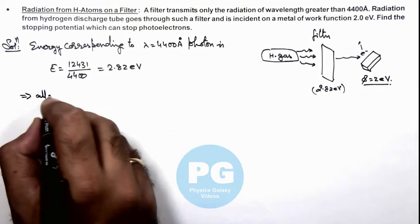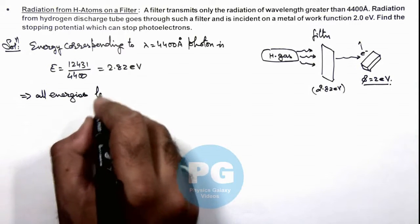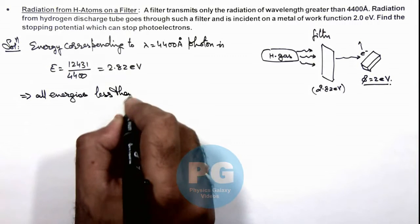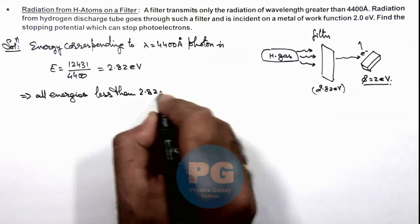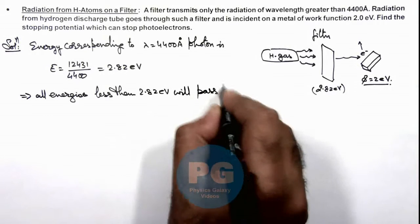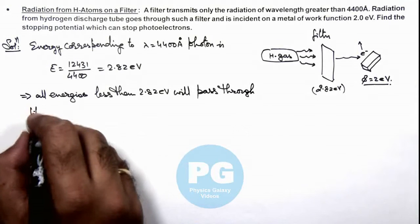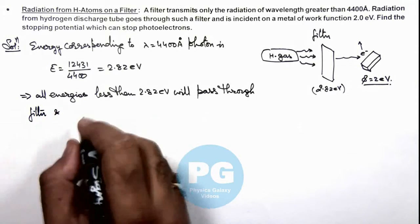All energies less than 2.82 electron volts will pass through the filter.